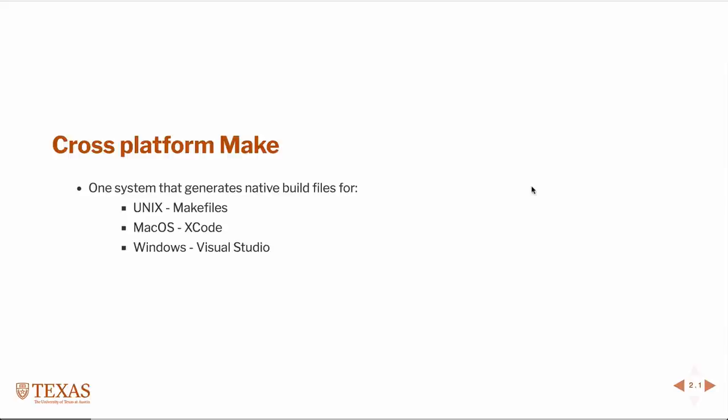If you had a project with several hundred source files, varying different names, possibly different languages, and you were trying to create one unified application, it would be almost impossible — or at least impossibly time-consuming — to do this from the command line. So you need an automated way, and traditionally on Unix systems that's done with makefiles, which are a set of instructions that tell the computer how to compile and link together different libraries and executables to make larger applications.